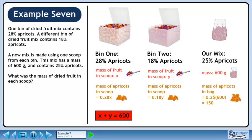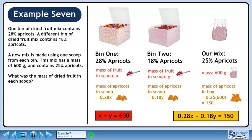When we get a scoop of dried fruit from one of the bins, the mass of apricots within that scoop can be found by multiplying the percentage by the mass of dried fruit. The mass of apricots pulled from bin 1 is 0.28x, and the mass of apricots pulled from bin 2 is 0.18y. In our 600 grams of dried fruit mix, the mass of apricots is 25% of 600, or 150 grams. The mass of apricots from scoop 1 plus the mass of apricots from scoop 2 must equal 150 grams.